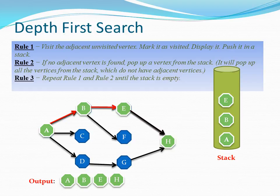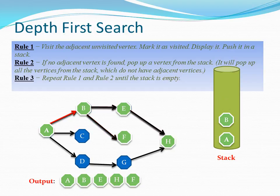From E we check for any other adjacent vertex — there is none, so rule two applies again. From B we check for any other adjacent vertex — yes, we have unvisited vertex F, so we visit it as per rule one. B then has no other adjacent vertex so we backtrack as per rule two. Looking at the stack, we now have only a single vertex, A.